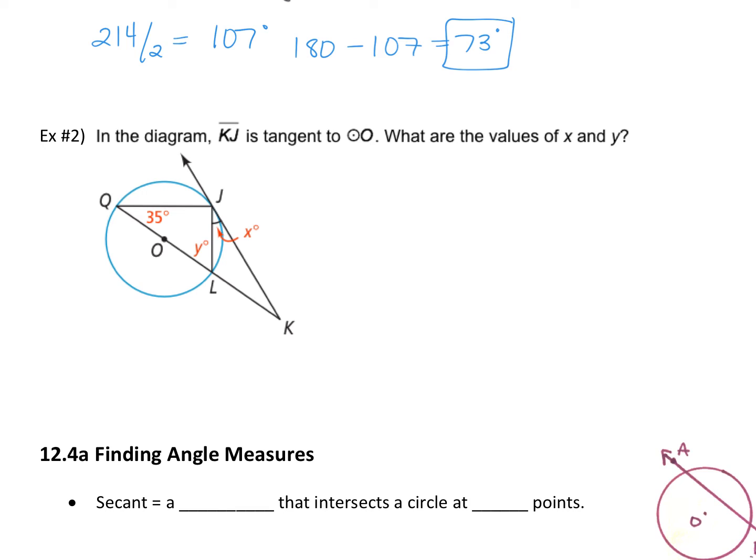Questions on that? All right. Example two and then we're done. See how short that is? I mean, done with this. We're going to do a review too. So example two looks like this. It says KJ is tangent. So this is a point of tangency. J is a point of tangency. What are the values of X and Y?